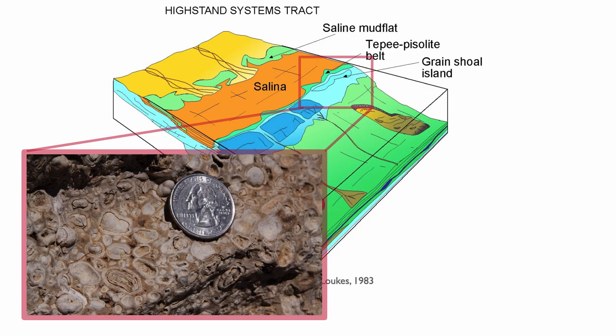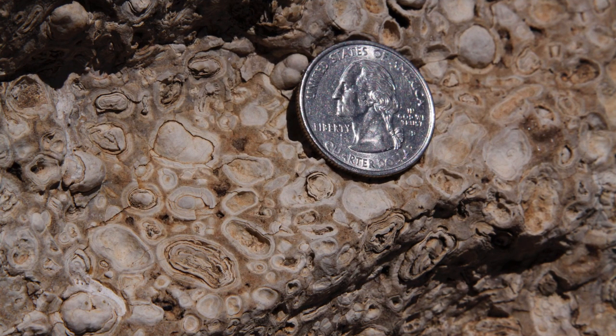What is a tipi-pizzolite belt? Here's an example of pisoids, or in this case, oncoids. Those are coated grains, but unlike ooids, they're not regular — they're very irregular. You can see all the undulation. It is thought that these are deposited by the mediation of blue-green algae, an algae that requires light to grow and does better in high salinity because of the absence of grazers, so less competition for that algae.